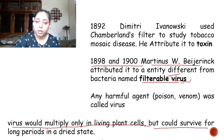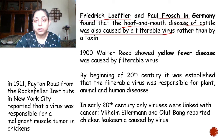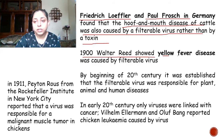In a separate study during that time, Frederick Loffler and Paul Frosch in Germany found that hoof-and-mouth disease of cattle was also caused by a filterable virus rather than a toxin. Then in 1900, Walter Reed showed that yellow fever disease was also caused by this filterable virus. All of them used Chamberland's filter for these studies. By the beginning of the 20th century, it was established that filterable viruses were responsible for plant, human, and animal diseases.